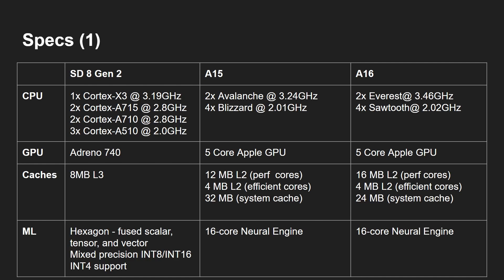A quick look at the specs — they're very different. The Snapdragon 8 Gen 2 has an octa-core processor: one ARM Cortex-X3 at 3.19 GHz, two Cortex-A715s at 2.8 GHz, two Cortex-A710s at 2.8 GHz, and three Cortex-A510s — a 1+2+2+3 setup. I cover all of this in my Snapdragon 8 Gen 2 video.